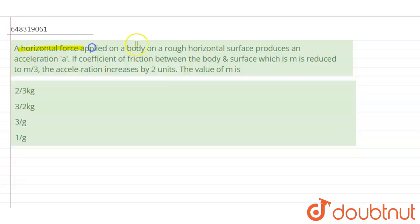horizontal force applied on a body on a rough horizontal surface produces an acceleration a. If coefficient of friction between the body and surface which is m is reduced to m by 3, the acceleration increases by 2 units. The value of m is